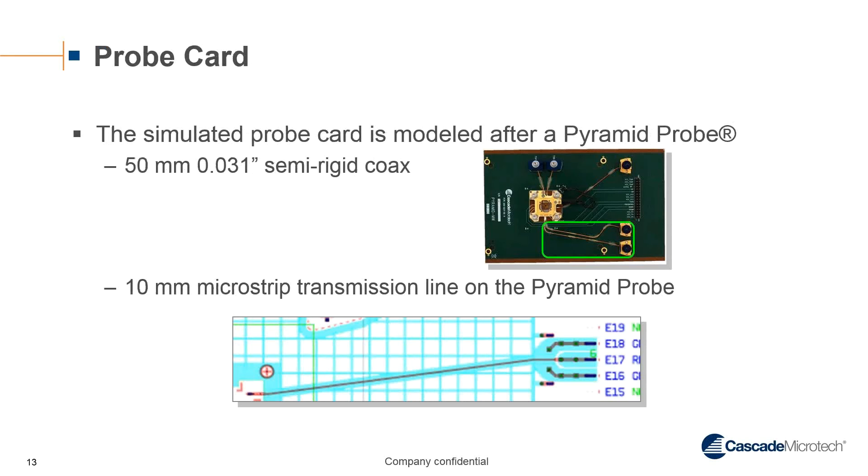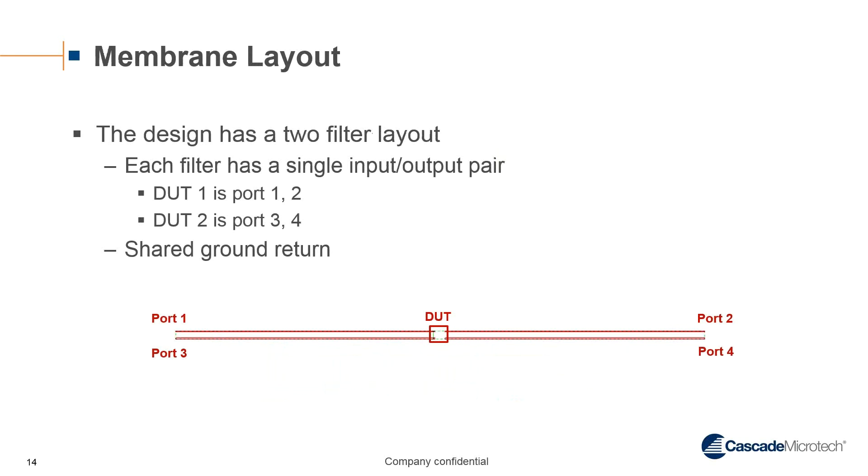The probe card which we simulated was based off of a pyramid probe card. So we had 50 millimeters of O31 semi-rigid coax from a connector, and then that was connected to a 10-millimeter microstrip transmission line that is a model based on the pyramid probe membrane technology. The membrane layout had a two-filter layout. Each filter had a single input and output pair, and DUT1 is port 1 and 2, DUT2 is port 3 and 4. As you can see, they're reasonably close together, and they had a shared ground return, since that is one of the main coupling venues for the energy.